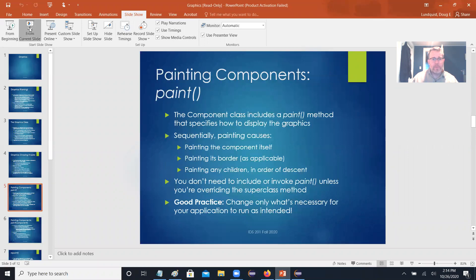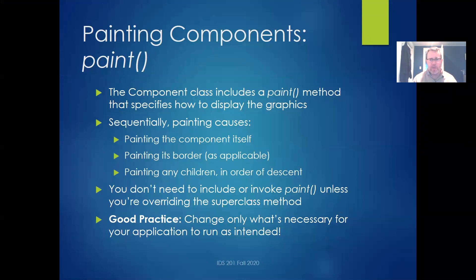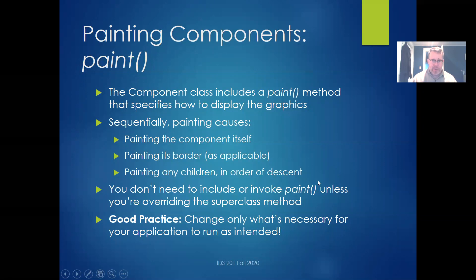Now, paint. The paint method — which is in the parent class of all JComponents like JPanel — tells how to display the graphics. There are three things that happen when you call paint. When you draw your window for the first time, paint automatically gets called. First, it draws the component itself. Then it draws its border, if applicable — not all components have one. Then it paints any children, meaning any components stacked on top. In general, you don't need to do anything with paint unless you're overriding it.